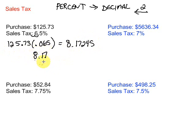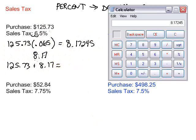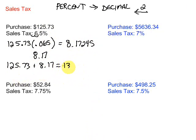Now, that's the amount of sales tax that we're going to pay. So to get the total bill, we need to take this and add it to the price of our purchase. So we would add $125.73 plus $8.17 and that will give us $133.90.